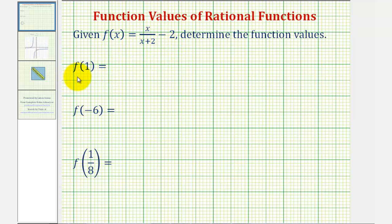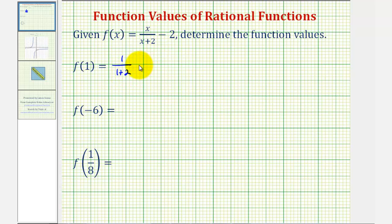To determine the function value f of one, we'll substitute one for x, which would give us one divided by the quantity one plus two, minus two. Let's first simplify this fraction.